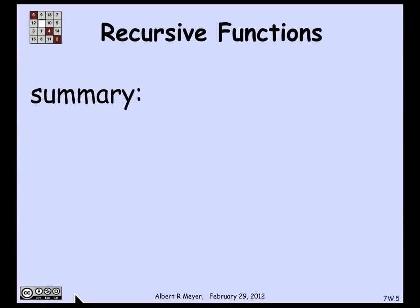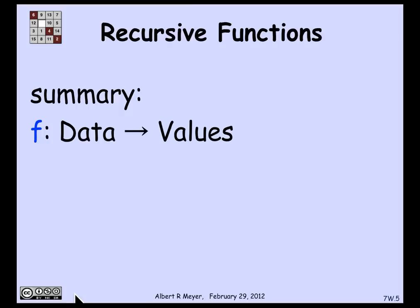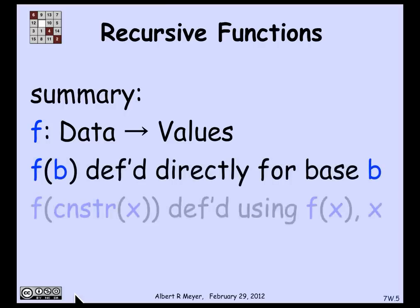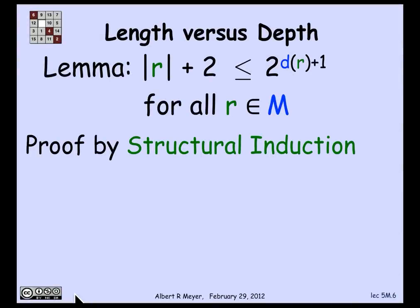To summarize, the recipe for a recursive function definition: define f going from the recursive data type to values. f of b is defined directly for base cases b, and f of the constructor of x is defined using f of x and x. Once you've defined a function recursively, you can start proving things about it by structural induction or by induction on its own recursive definition.